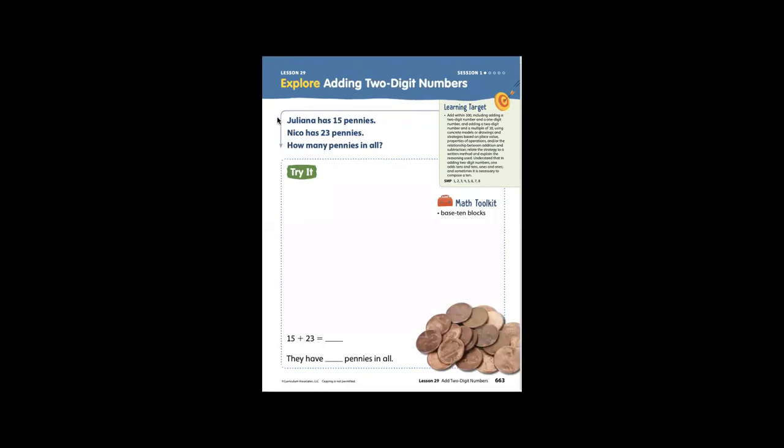We can write our equation. If Juliana has 15 and Nico has 23, in all means we are putting them together, making two parts. A part plus a part equals the whole.